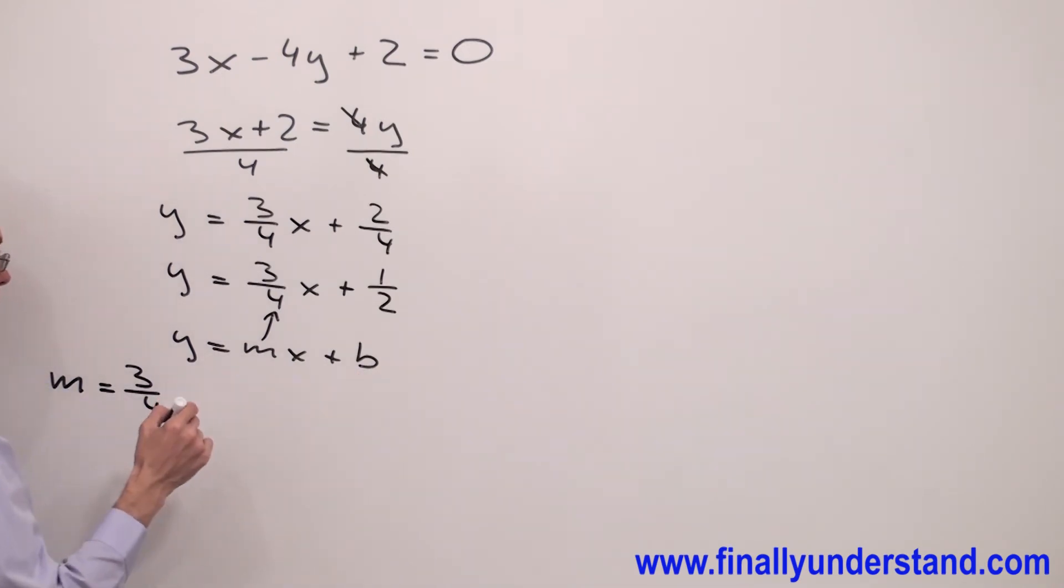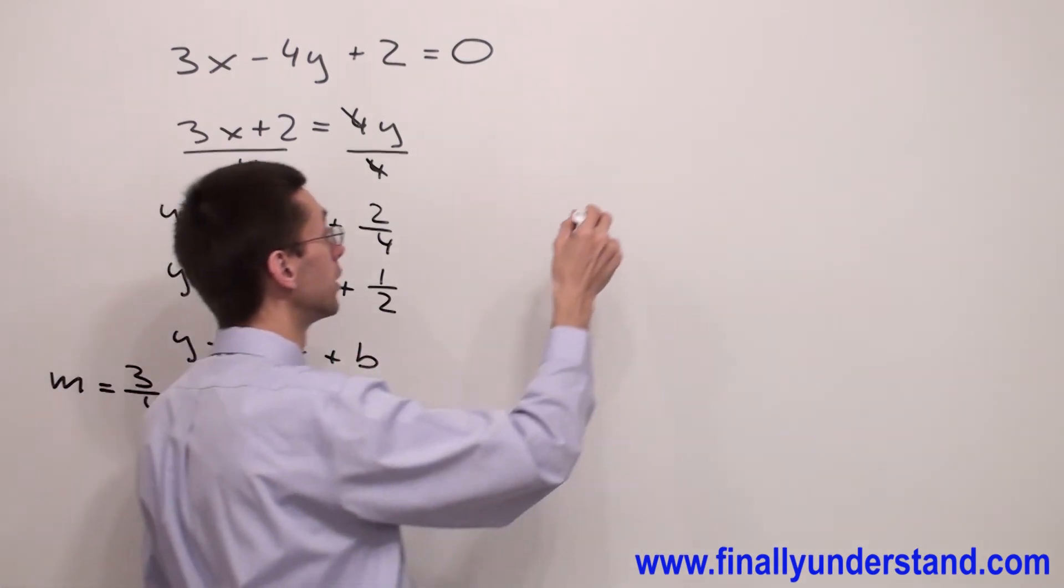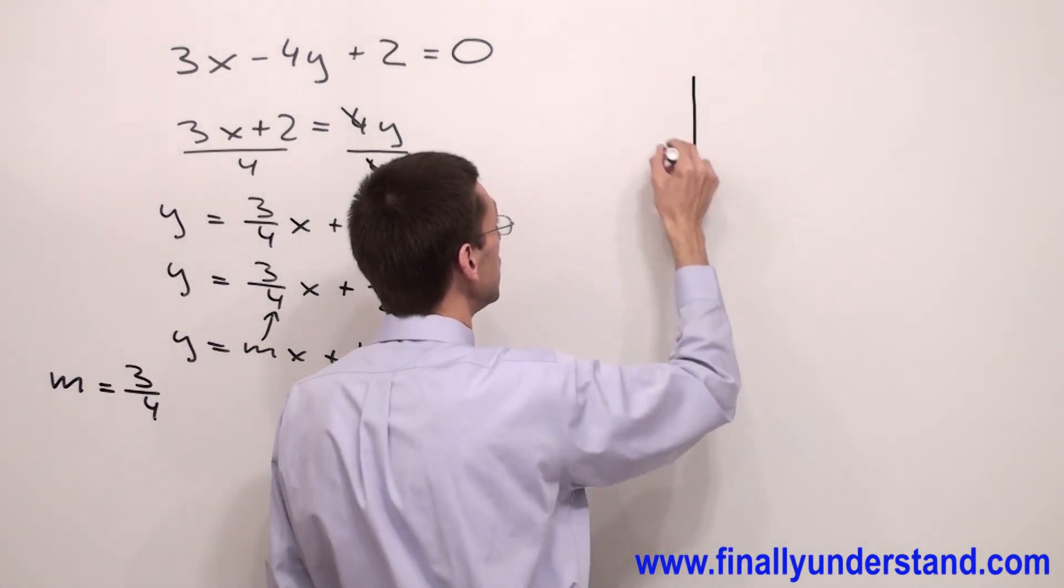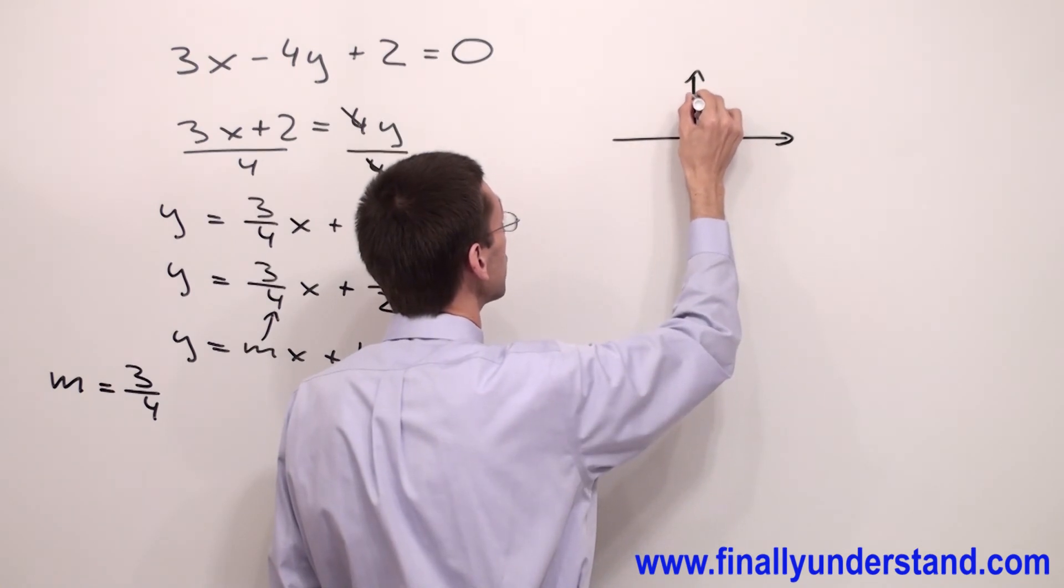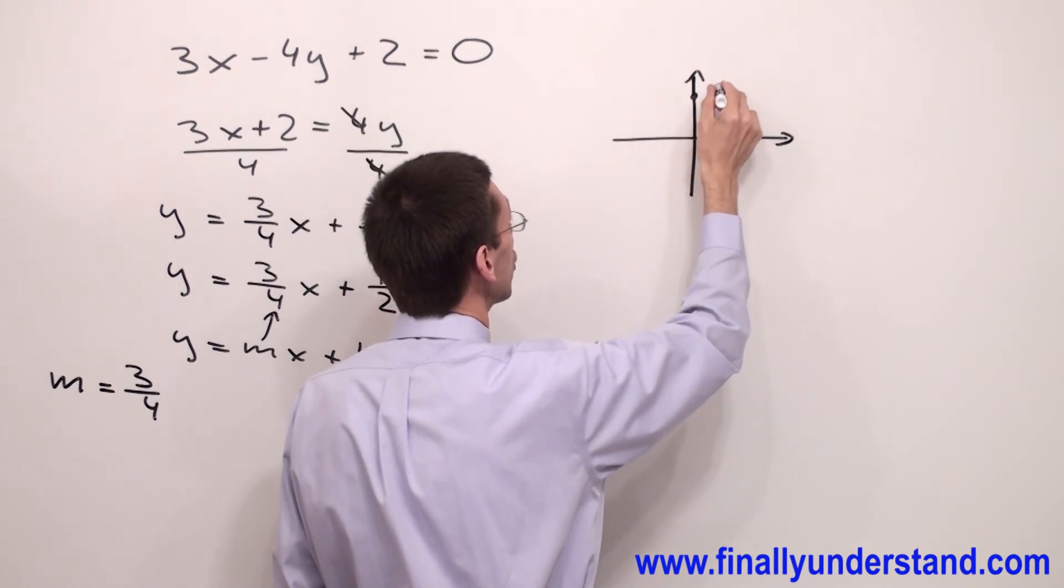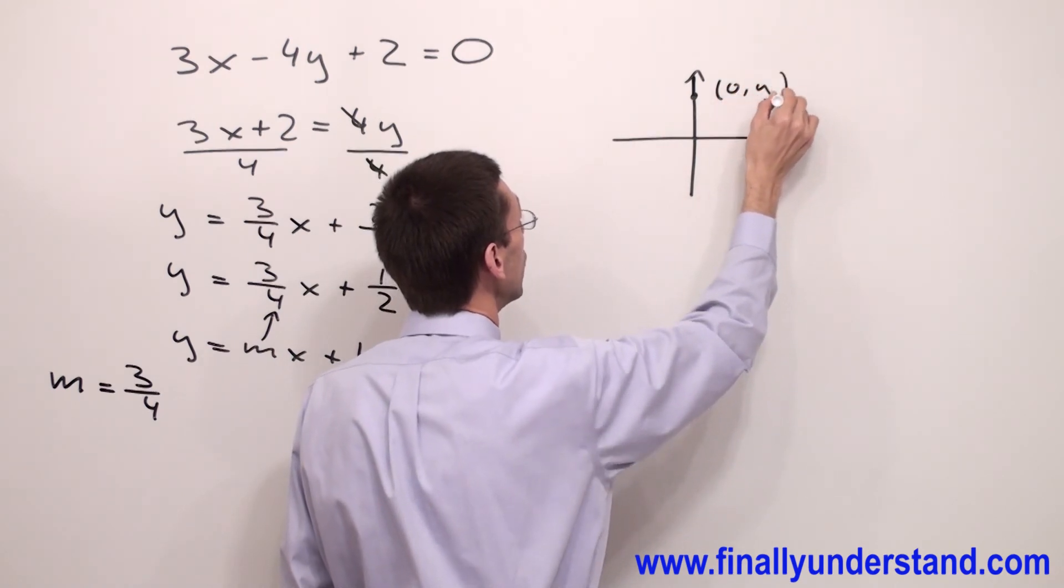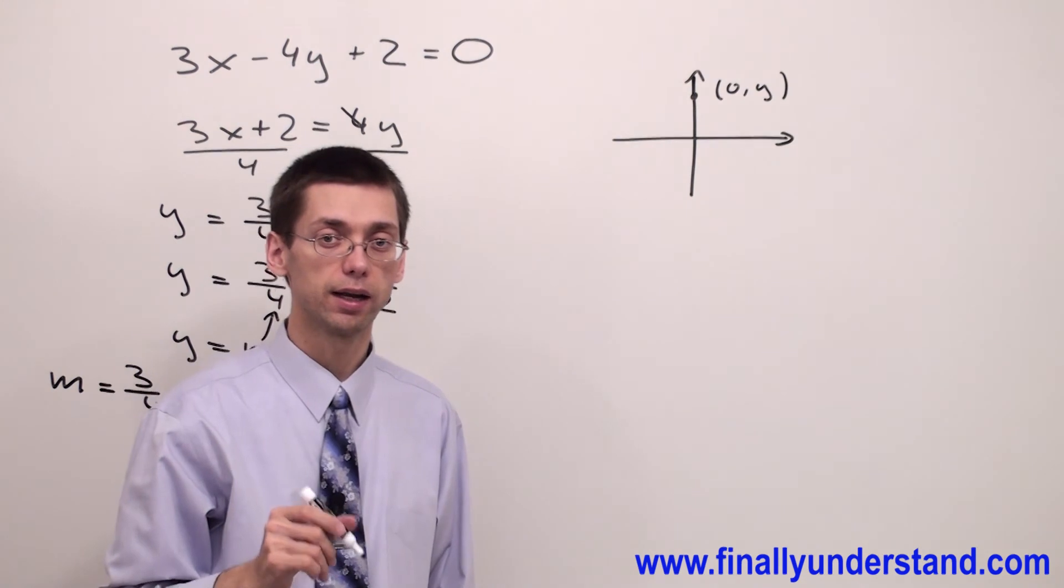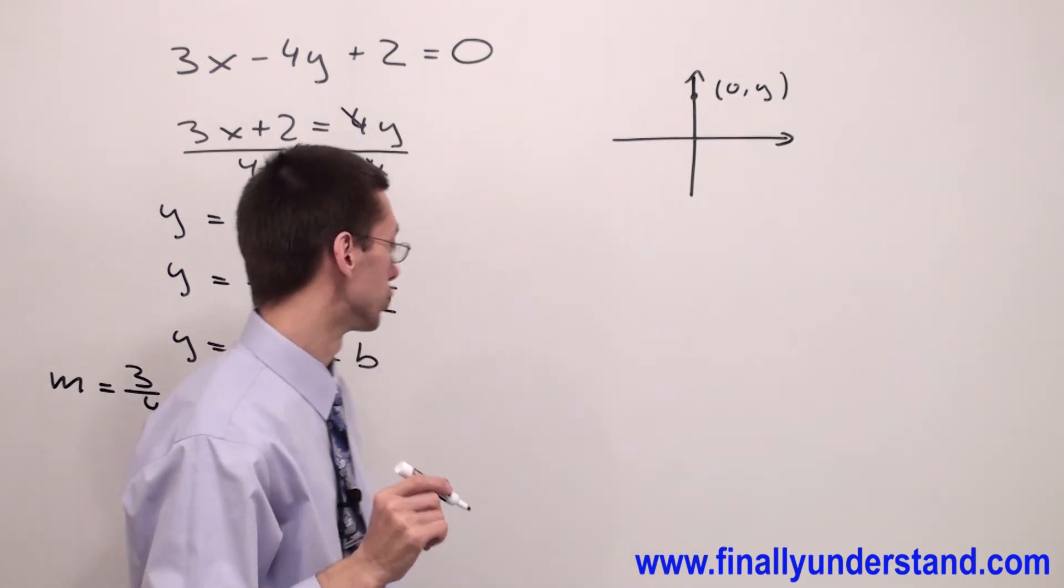So my y-intercept equals one-half. Let me remind you that y-intercept is the point on the y-axis which has coordinate (0, y), where y can be any real number. The x-coordinate is always equal to 0.